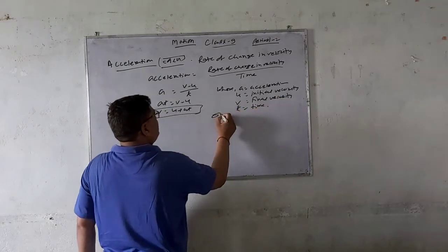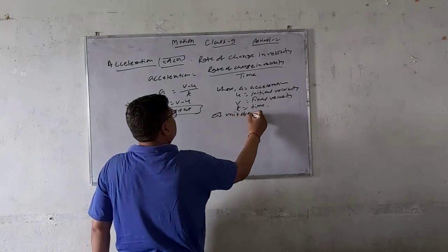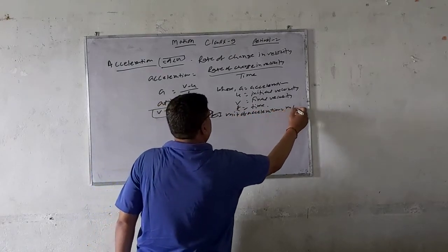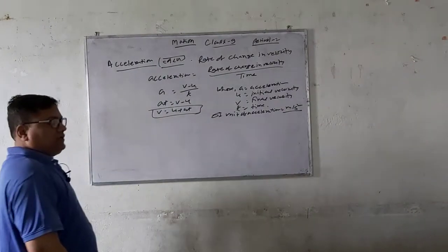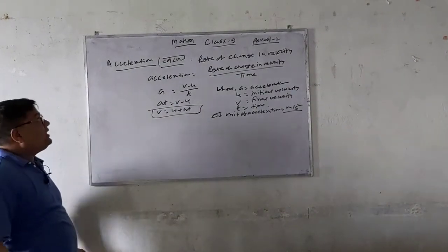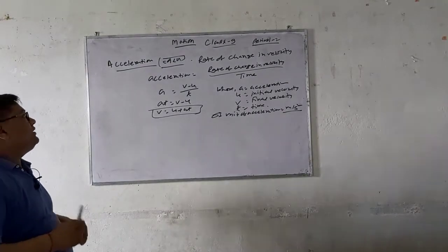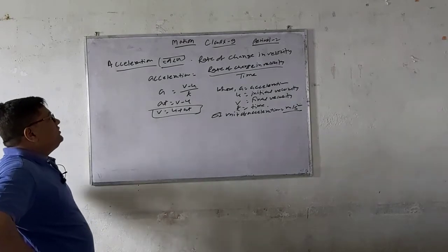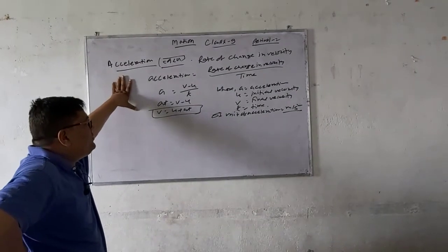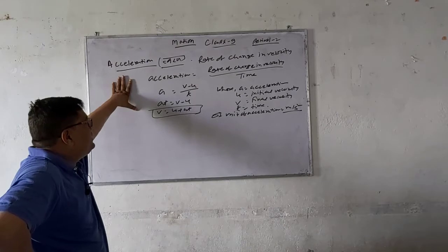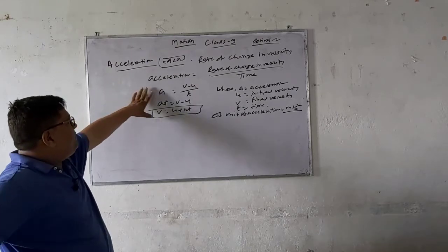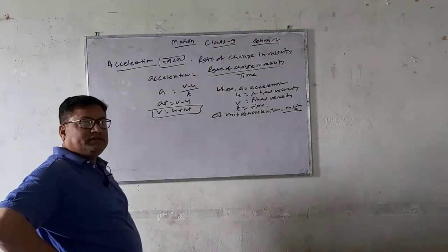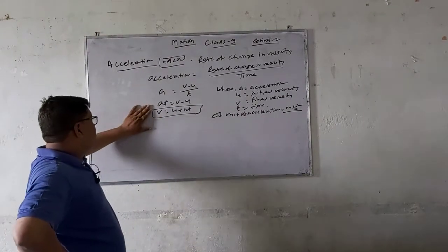The SI unit of acceleration is meter per second squared. So acceleration equals rate of change in velocity divided by time taken. We can write: A equals V minus U upon T, or AT equals V minus U, or V equals U plus AT. This is also called the first equation of motion.